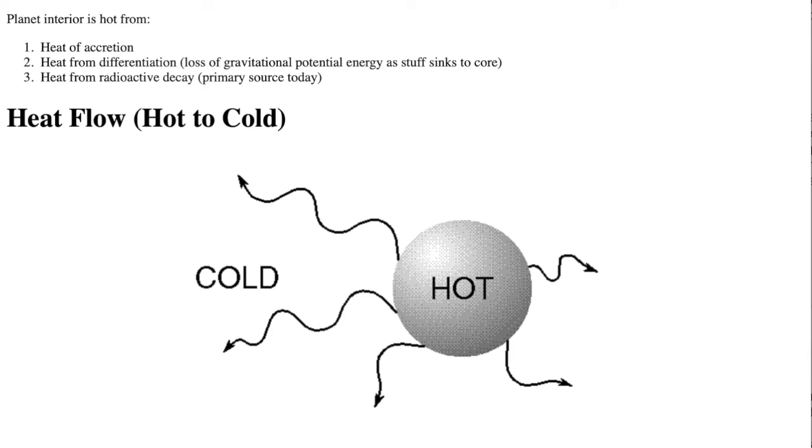A second source is during differentiation. Loss of gravitational potential energy as the denser material sunk to the core. Both of those sources occur early in a planet's history. The primary source today, billions of years later, is the heat from radioactive decay of unstable atomic nuclei. Uranium-238, uranium-235, thorium-232, and potassium-40.